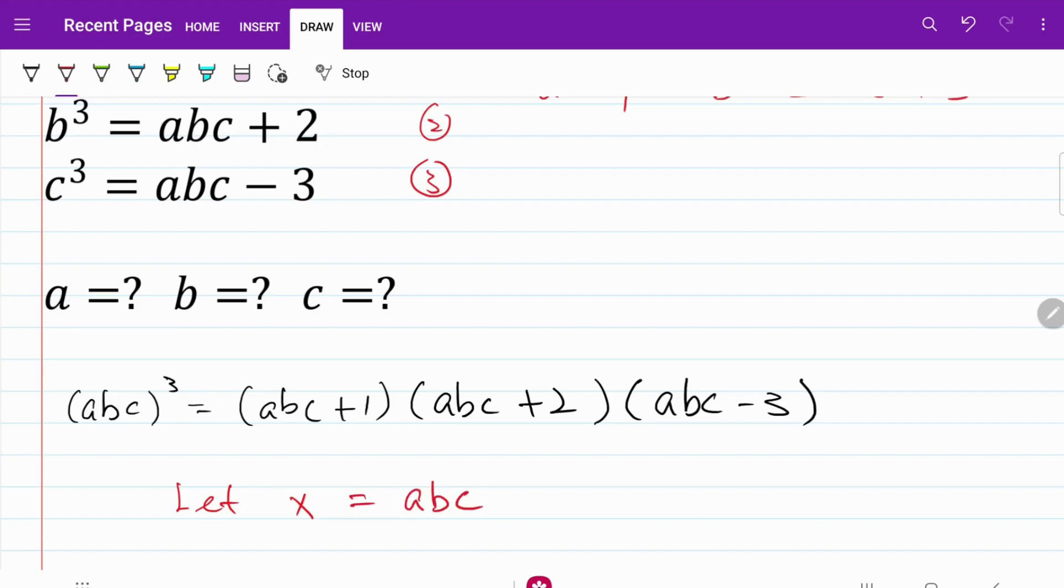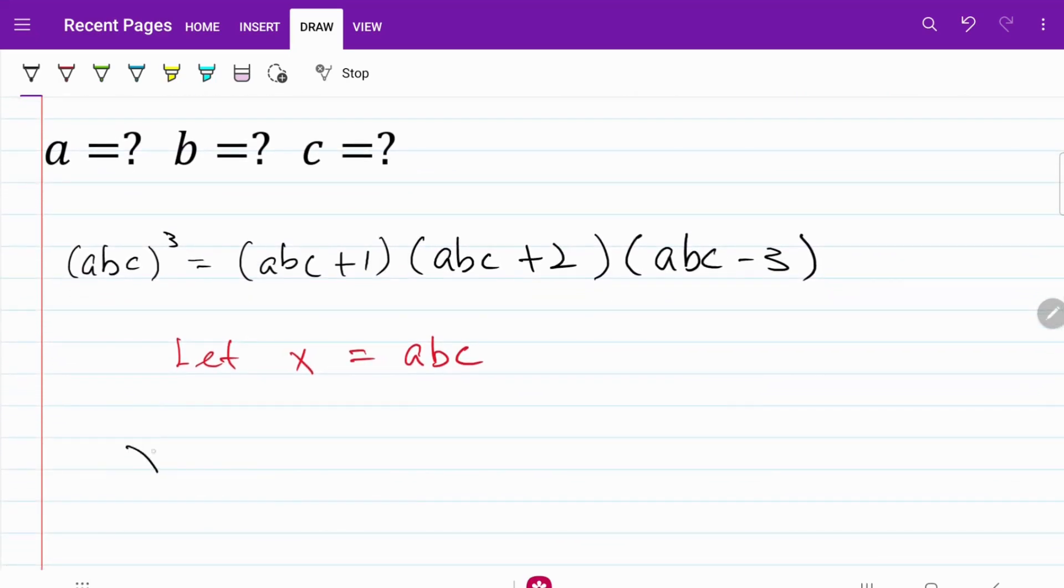And let's go ahead and rewrite our equation. So now I have x cube is equal to x plus one, x plus two, and x minus three.